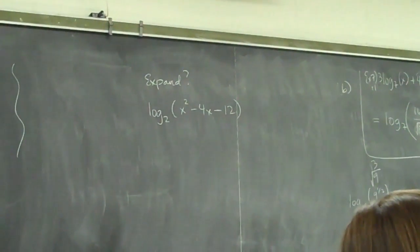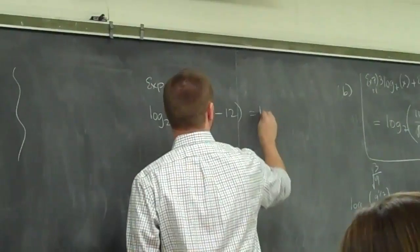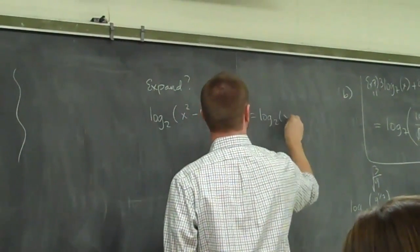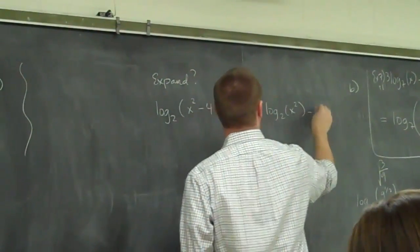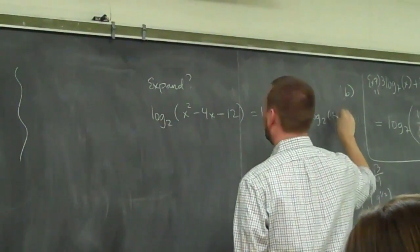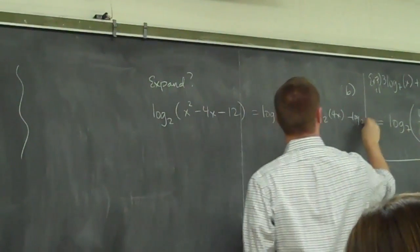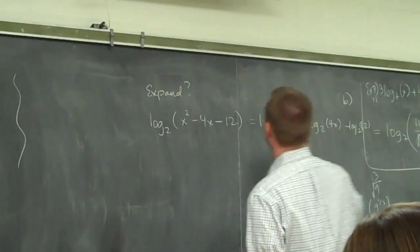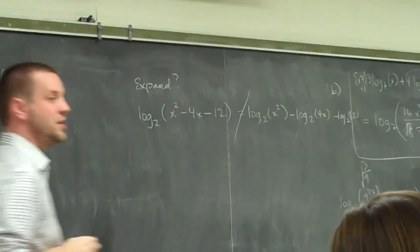Does this equal the log base 2 of x squared minus the log base 2 of 4x minus the log base 2 of 12? Is that true? No, not true at all.